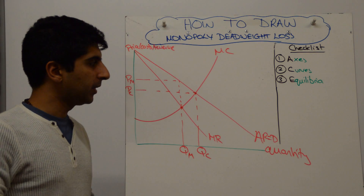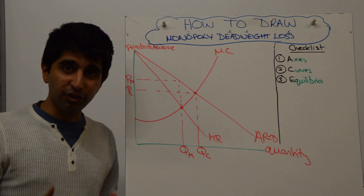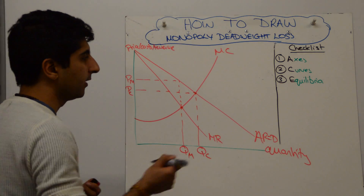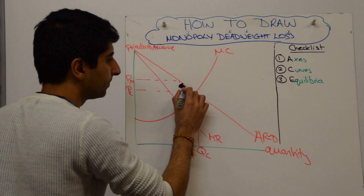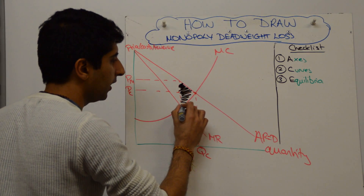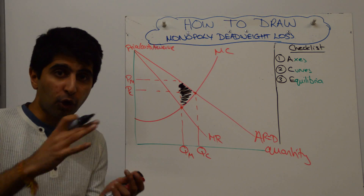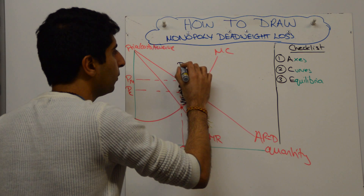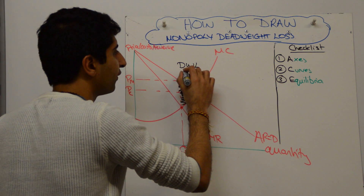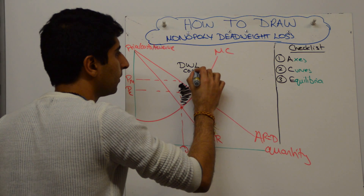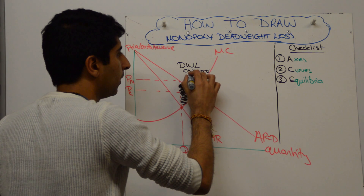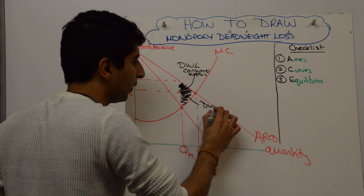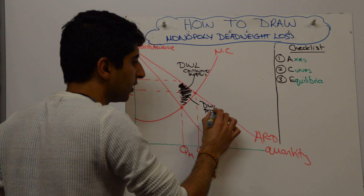Not good. But what we can do on this diagram is actually shade in an area of loss. And that area is this black triangle. So that black triangle is the total loss to society, but we can split it up. This top triangle is a deadweight welfare loss of consumer surplus. And this bottom triangle is a deadweight welfare loss of producer surplus.